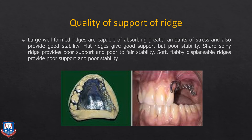Regarding the quality of residual ridges: tall, rounded ridges provide good retention, stability, and support, similar to complete dentures. Severely resorbed ridges, knife-edge ridges, or ridges with flabby tissues display poor stability, retention, and support, as there is little resistance to RPD movement along the sagittal, horizontal, or vertical fulcrum lines other than the abutment teeth.